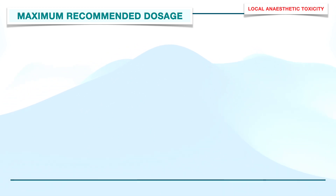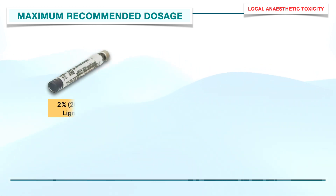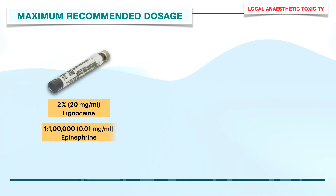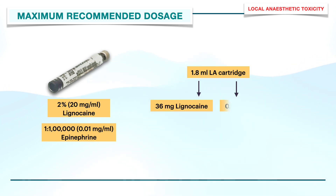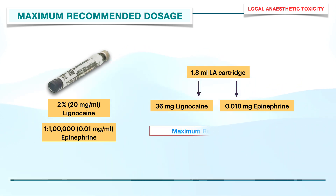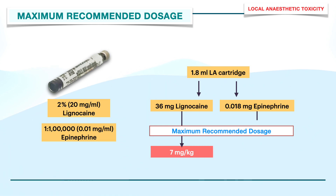I will be discussing about lignocaine here as it is the most commonly used local anesthetic. The commonly available lignocaine cartridge consists of 2%, or 20 mg per ml, lignocaine and 1 in 100,000, or 0.01 mg per ml, epinephrine. The cartridge contains 1.8 ml local anesthetic solution, which equates to 36 mg lignocaine and 0.18 mg epinephrine. The maximum recommended dose for lignocaine is 7 mg per kg, while for epinephrine it is 0.2 mg per appointment.